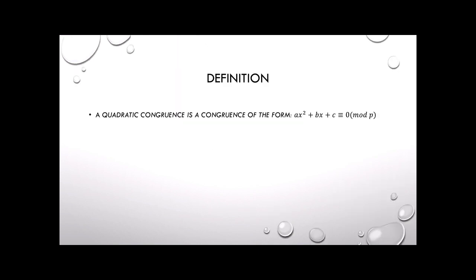First, a definition. A quadratic congruence is a congruence of the form ax squared plus bx plus c equals 0 mod p, where we're assuming the mod is prime. It's more complicated if the mod is not prime.